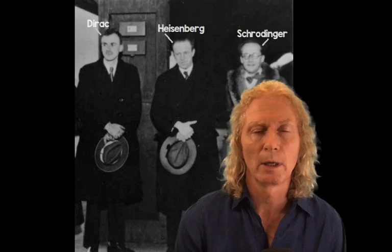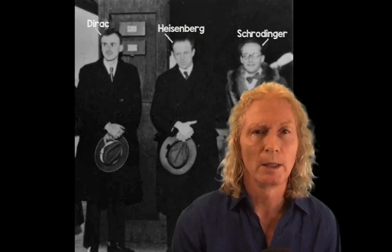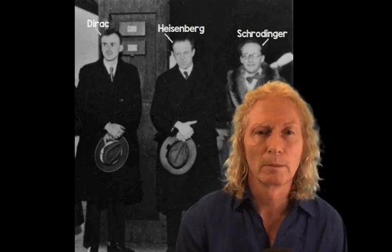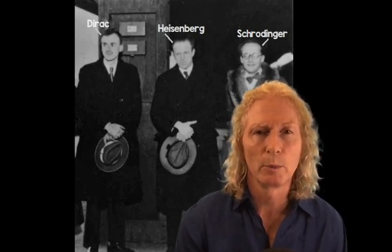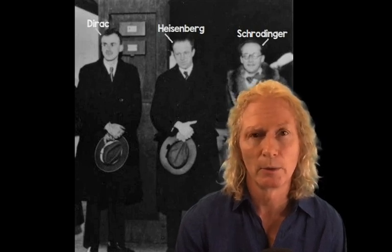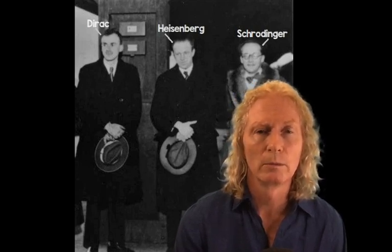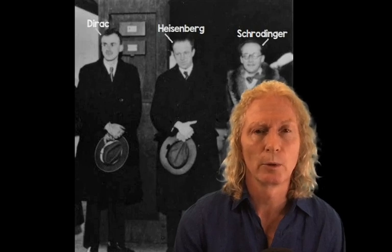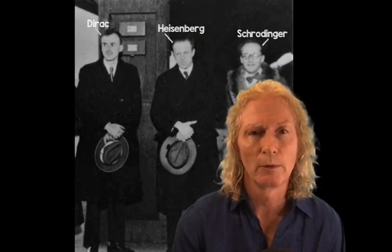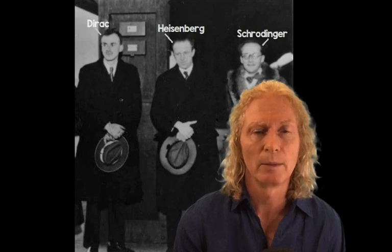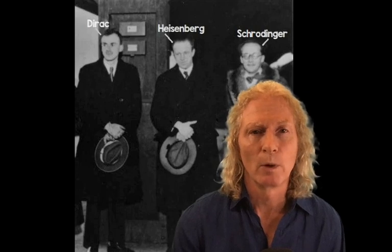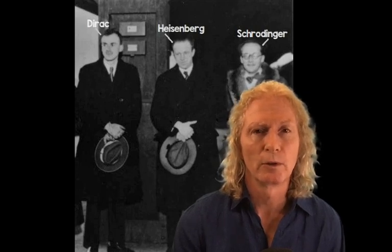Afterwards, he applied for postgraduate studies at Cambridge. They offered him a small fellowship, which he figured was not going to be enough to support him. So he went back to school in Bristol and got another degree in mathematics. After that, he went off to Cambridge, where they gave him a slightly bigger fellowship, and that worked out well for Dirac as well as for physics.